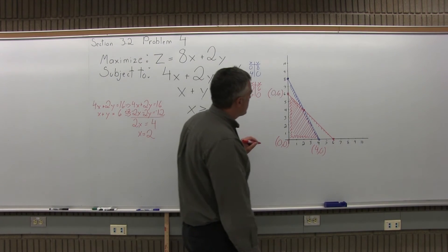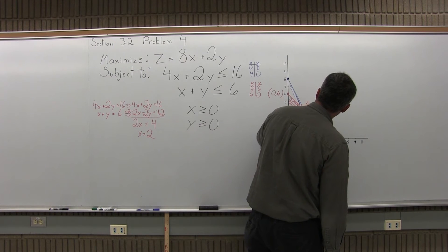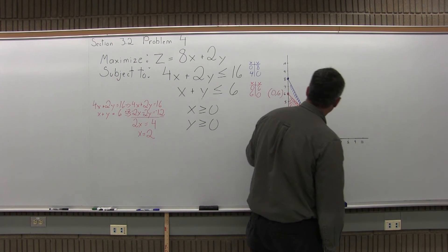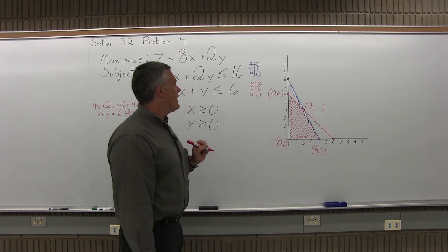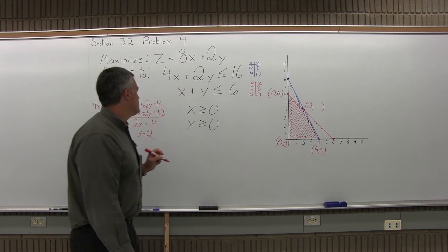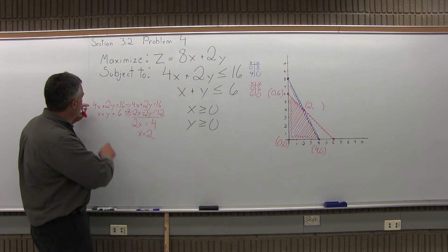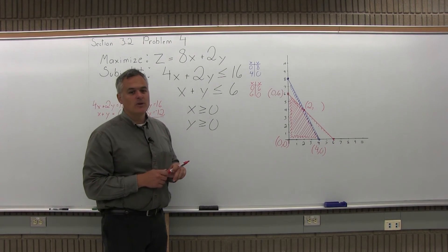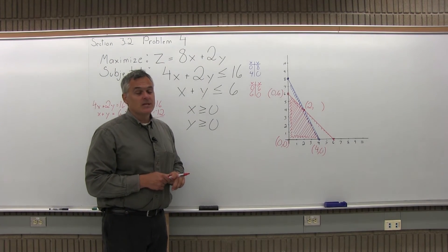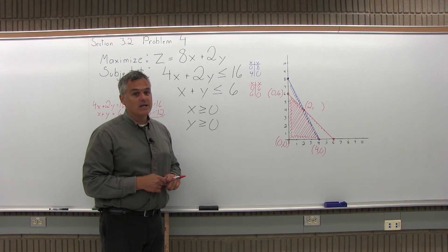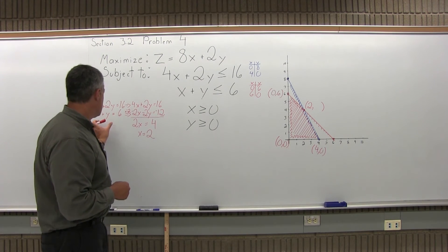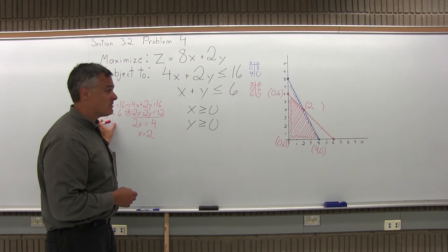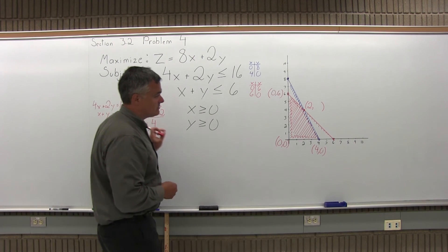Now one of my variables has the same number in front but with opposite signs, so I can add the equations together. 4x plus negative 2x is positive 2x. Positive 2y and negative 2y cancel. Positive 16 and negative 12 give 4. So 2x equals 4, divide out the 2, and x equals 2. So the x value at this point of intersection is 2. To find the y value, plug x equals 2 back into either original equation. Using x plus y equals 6, if x is 2, then y must be 4.